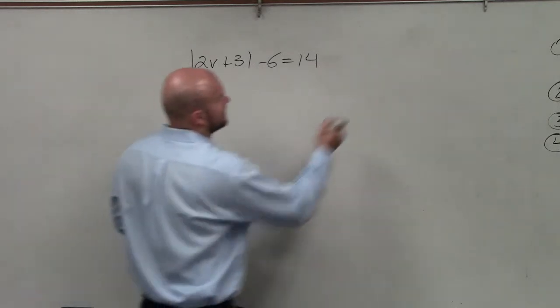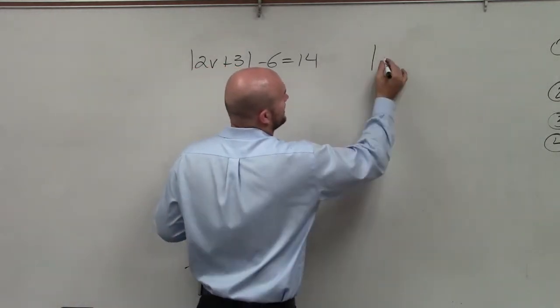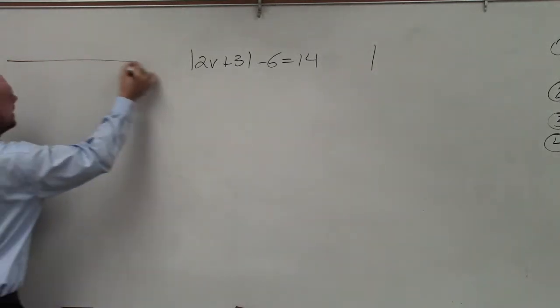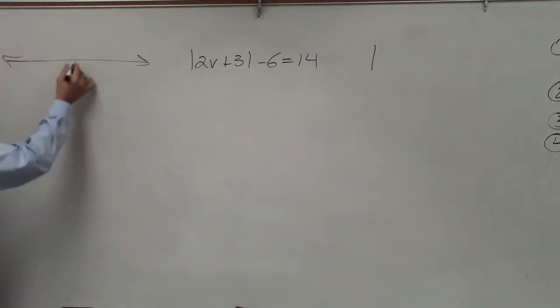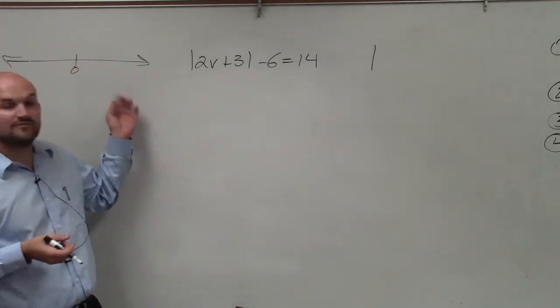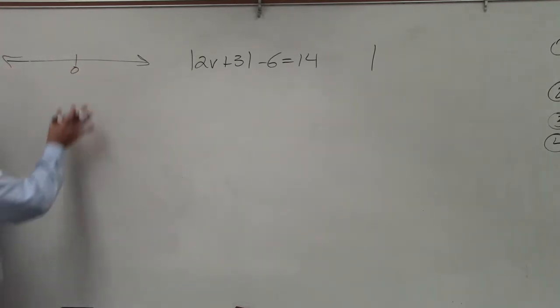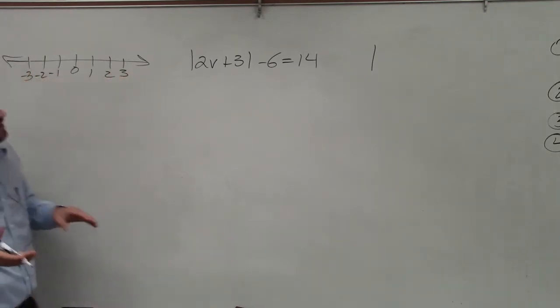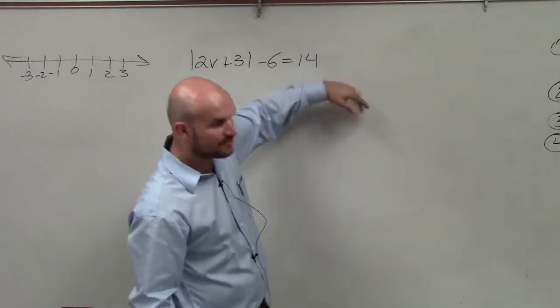So the basic thing to understand is the easiest way to represent the absolute value is the absolute distance from zero. Going from solving inequalities, we can go back to our number line. Let's say that's 1, 2, and 3, and then negative 1, negative 2, and negative 3. What the absolute value represents is the absolute distance from zero.